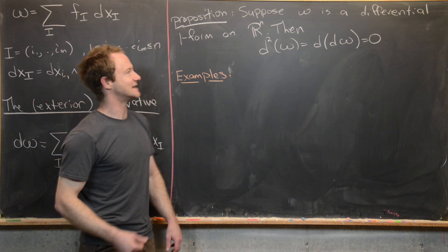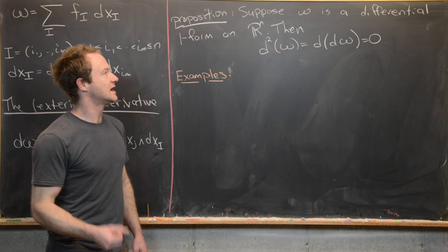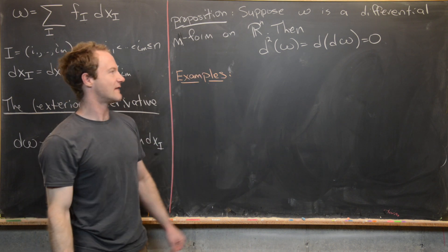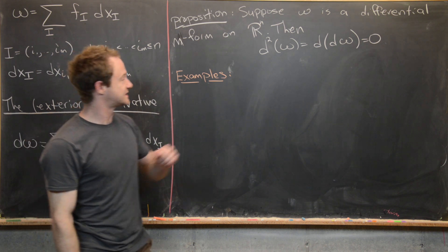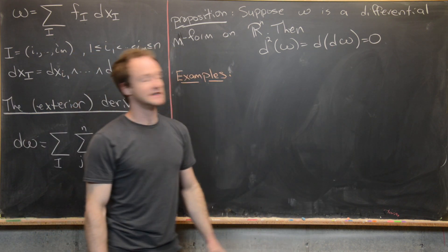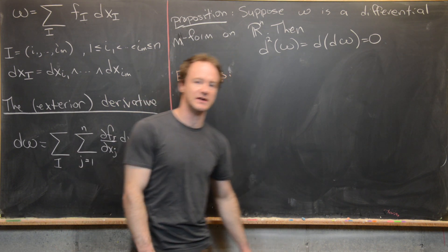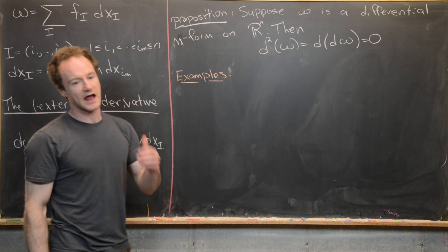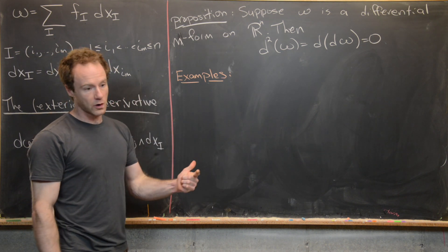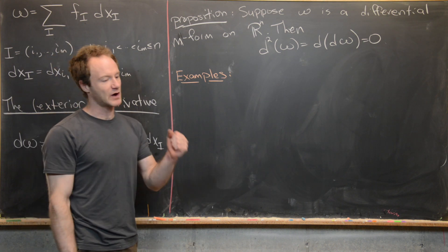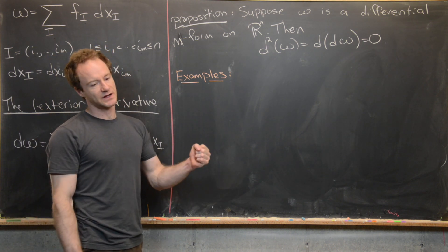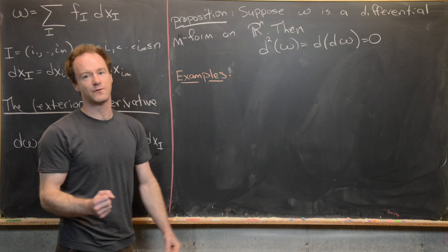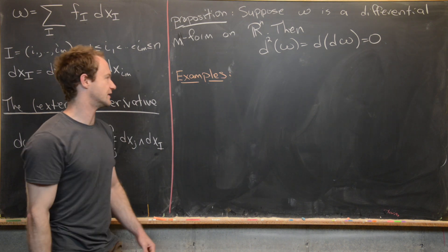The proposition we want to look at today is: if omega is a differential m-form on R^n, then d squared applied to omega — in other words d applied to d omega — equals zero. If you take two exterior derivatives of a differential m-form you get zero. We'll look at examples: a 0-form on R^4, a 1-form on R^4, and a 2-form on R^4. We do R^4 so that a second derivative of a 2-form takes us into a 4-form, for which we need to work over R^4.